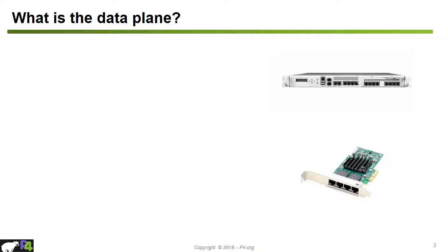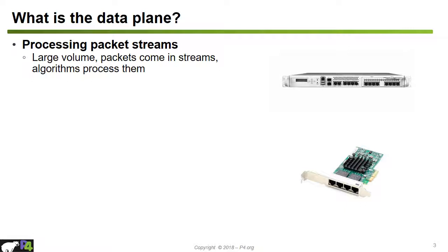So what is the job of the data plane? Basically the main job of the data plane is processing a large volume of packets. There are millions of packets per second that enter a high performance router. Packets come in streams of data and clever algorithms on the switches are used to process them. In order to be really fast, only a very small time — on the order of a few nanoseconds — is available to process a single packet. So the algorithms executed on a per-packet basis need to be really simple in order to run super fast.